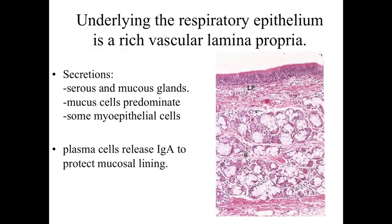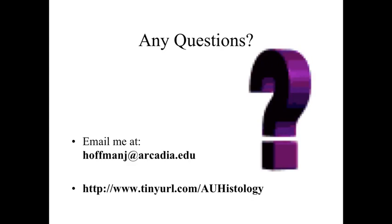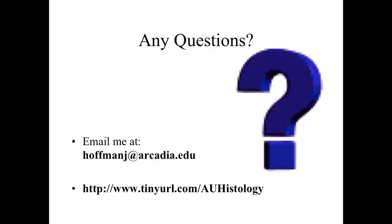Underlying the respiratory epithelium throughout most of the conducting portion is a very rich vascular lamina propria of loose connective tissue. In higher regions of the conducting portion, there are serous and mucous secreting glands — primarily mucous secreting — as the dominant secretory source, along with some myoepithelial cells to help propel mucus through the gland and duct structures. There are also many lymphocytes underneath the epithelium that release IgA, an antibody involved in protecting the mucosal lining — an immunological protective mechanism. That finishes our general introduction to the respiratory system.